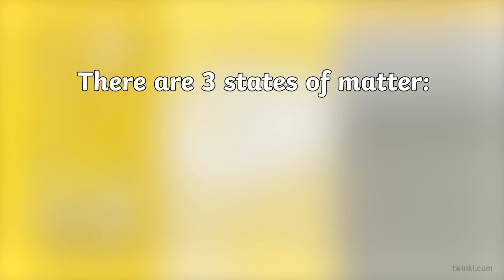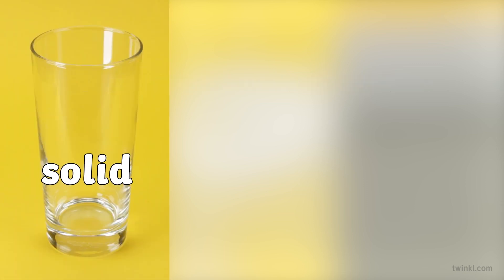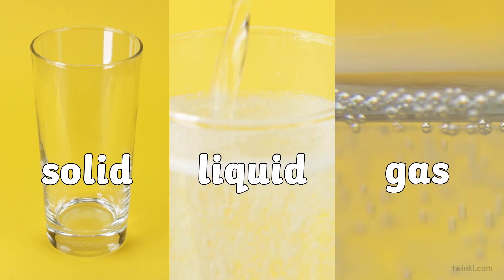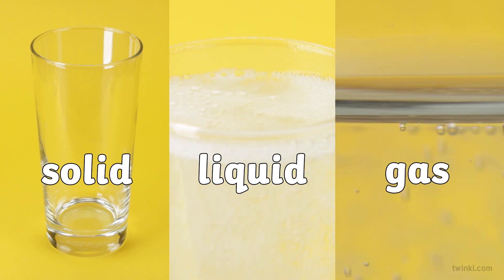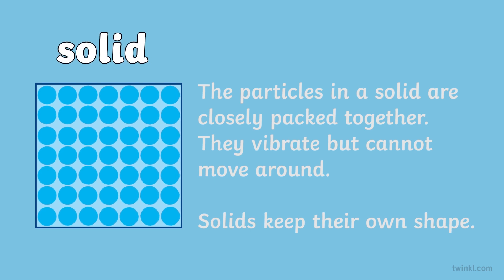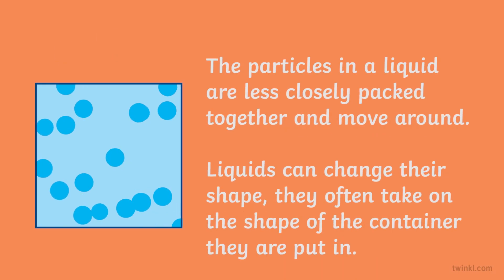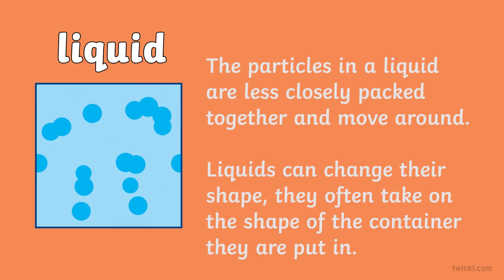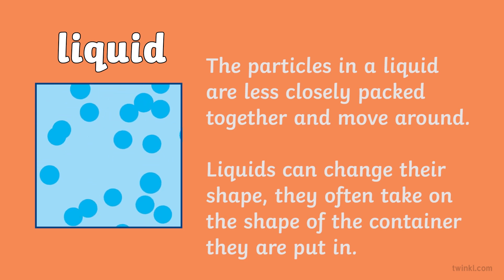There are three states of matter: solid, liquid, and gas. The particles in a solid are closely packed together — they vibrate but cannot move around, and solids keep their own shape. The particles in a liquid are less closely packed together and move around; liquids can change their shape.